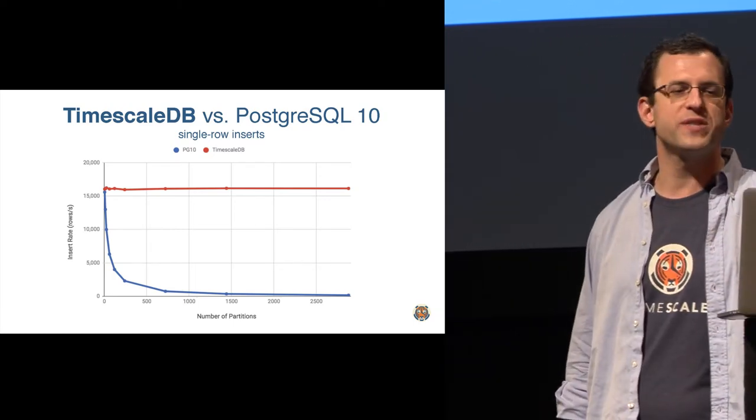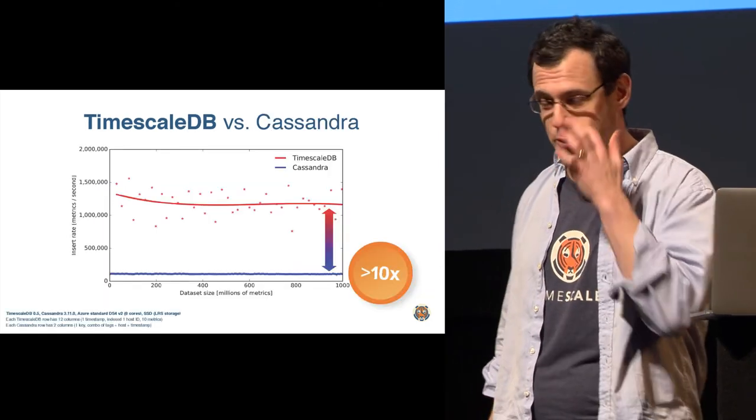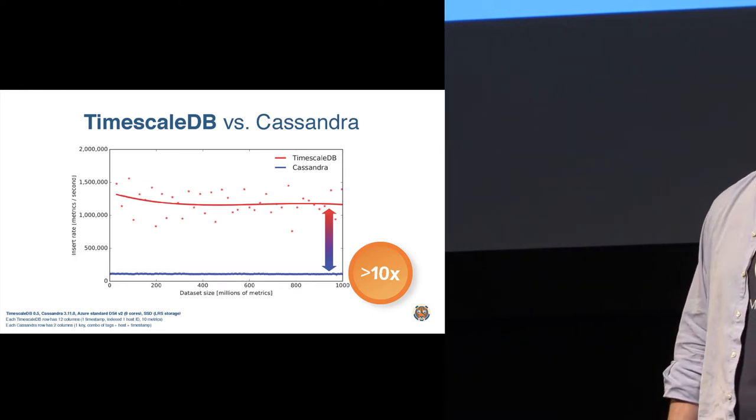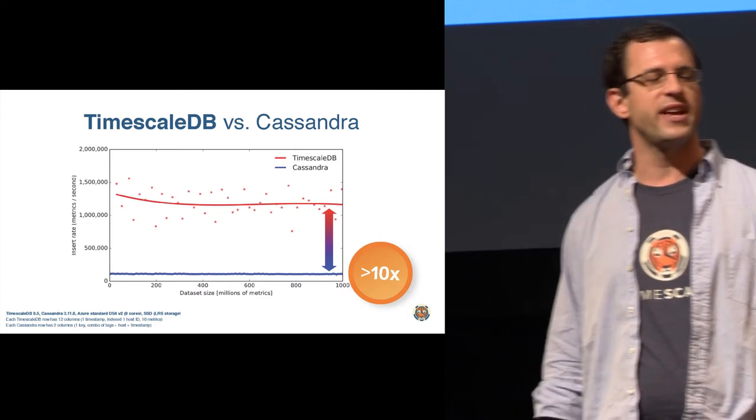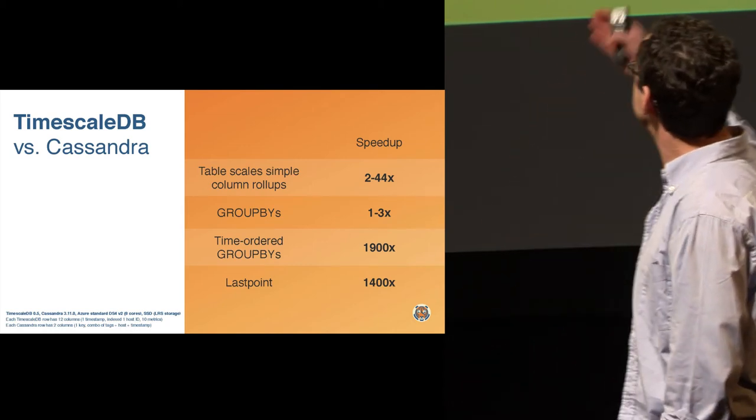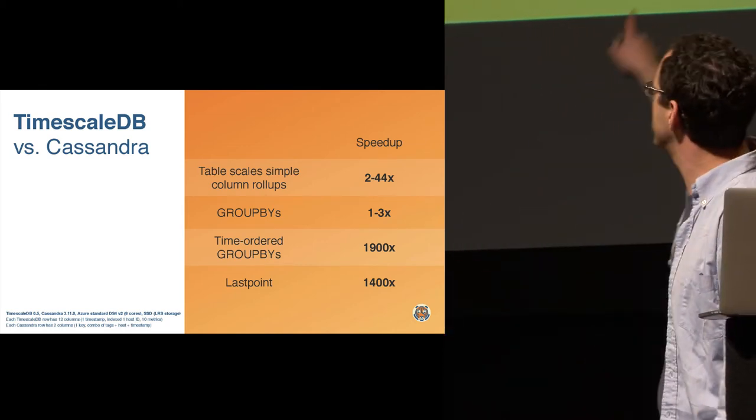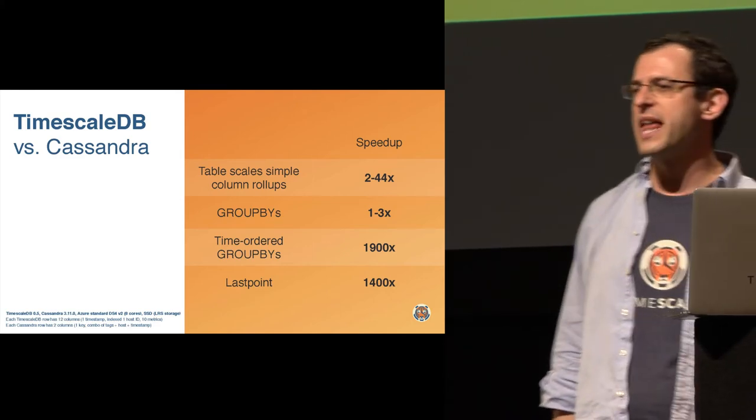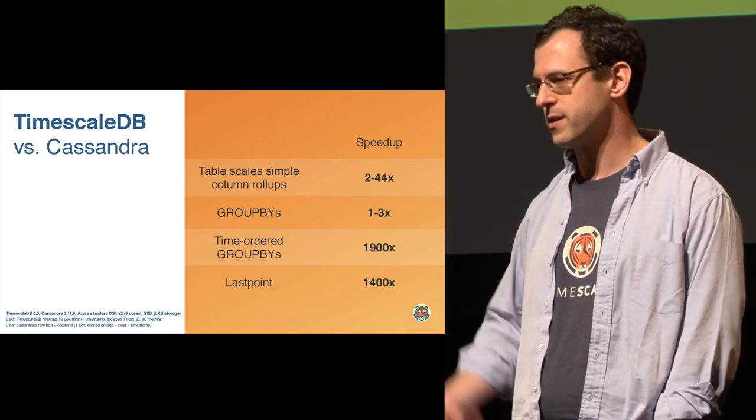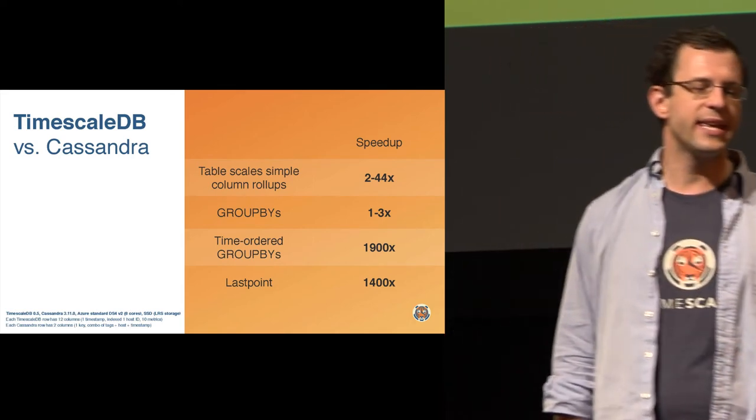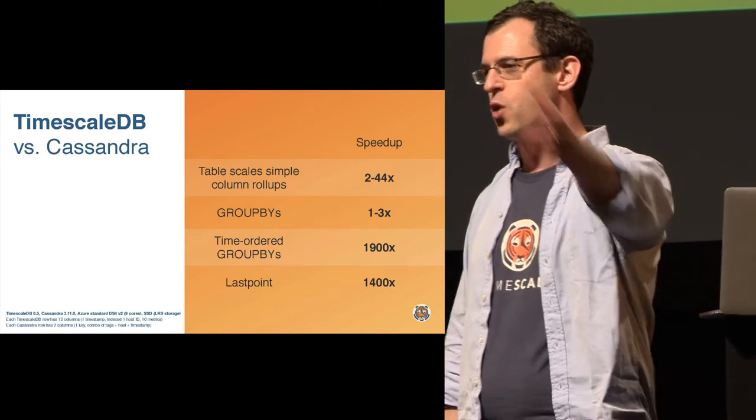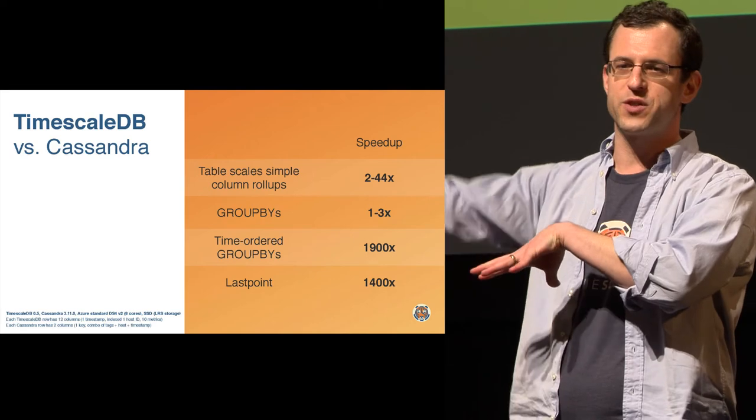The main difference is in a traditional database, you often will create a partition per day or per month. You're not thinking about how to make your system efficient for handling 50,000 partitions on a single node. The other question is, what about NoSQL? It turns out that Postgres, in its own way, is engineered pretty robustly against some of these NoSQL databases. We're seeing about a 10x performance improvement against Cassandra. Similarly, a whole bunch of speed-ups in queries - simple scans being 2 to 40 times faster, time-ordered group bys being close to 2,000 times faster.